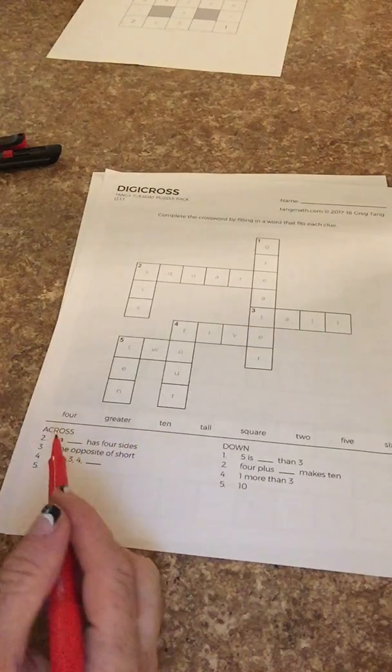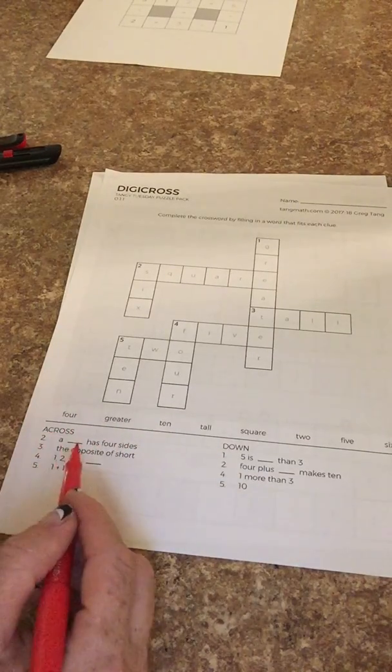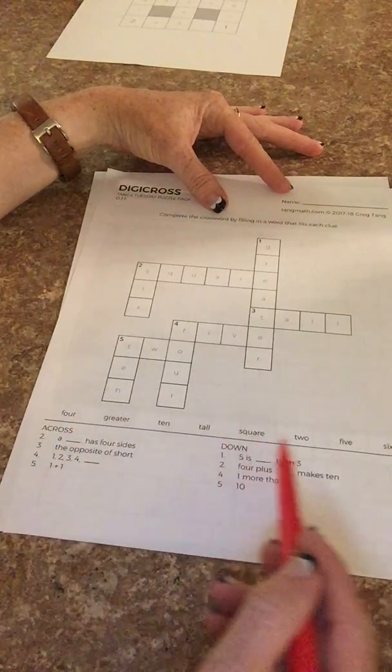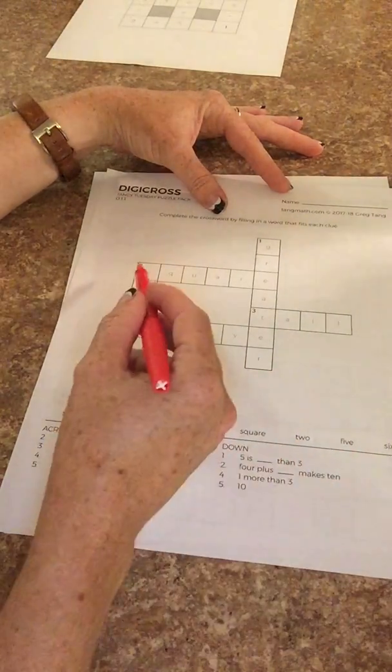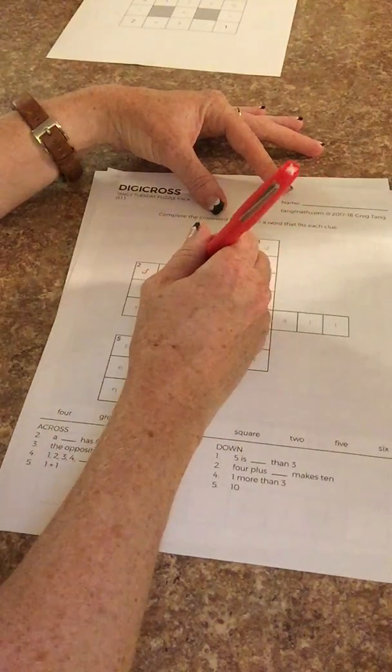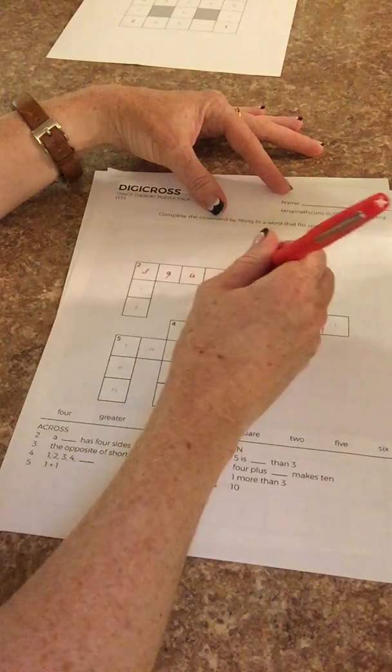I would love to know that. So anyway, two across: a blank has four sides. The Digicross puzzle gives them choices here. So 'square' - it's already filled in but I'll trace over it anyway.